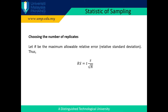High uncertainty in any analytical step will increase the uncertainty of the overall chemical analysis. If we do not know the random error in the individual analysis, we can perform some trial analysis to establish error estimation. Thus, the need of applying statistics in choosing the number of replicates is crucial.